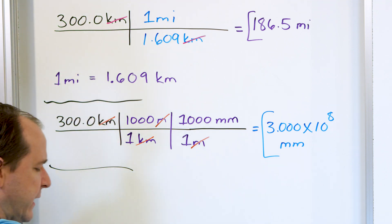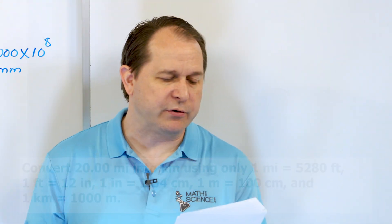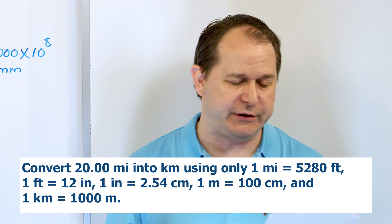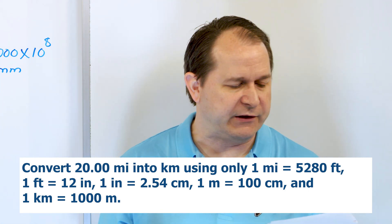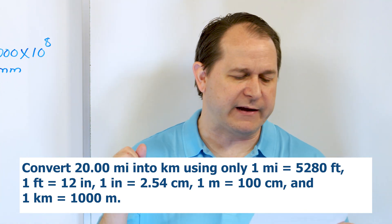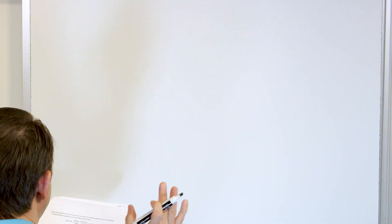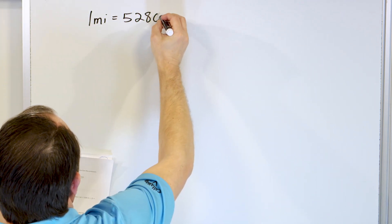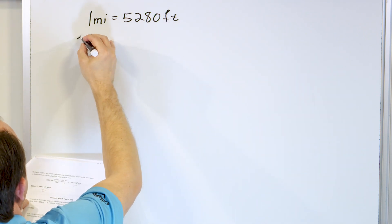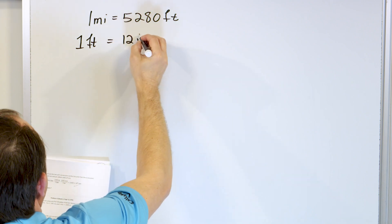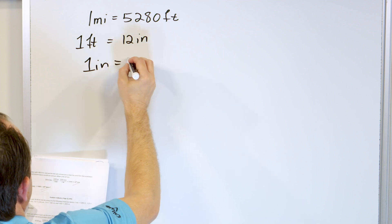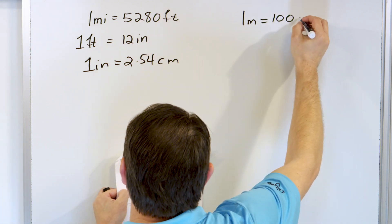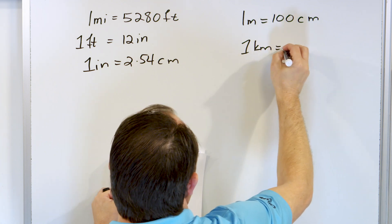That is problem one, part A and part B. Problem number two: convert 20.00 miles into kilometers using only the following conversion factors: one mile is 5,280 feet; one foot is 12 inches; one inch is 2.54 centimeters; one meter is 100 centimeters; and one kilometer is 1,000 meters.